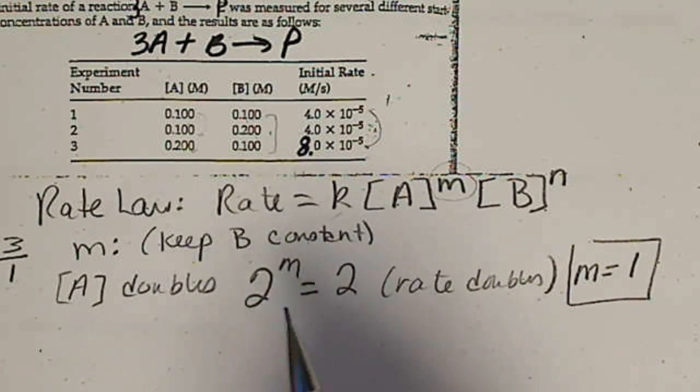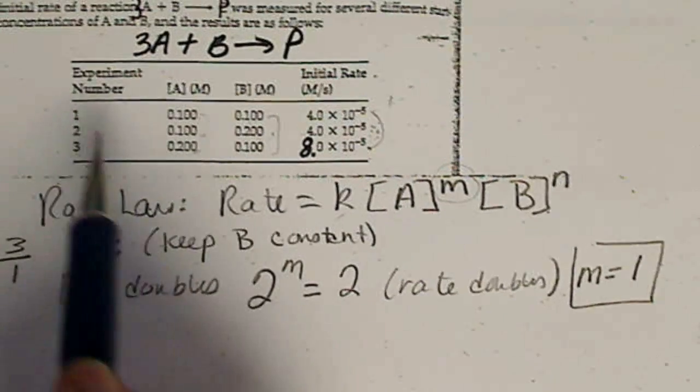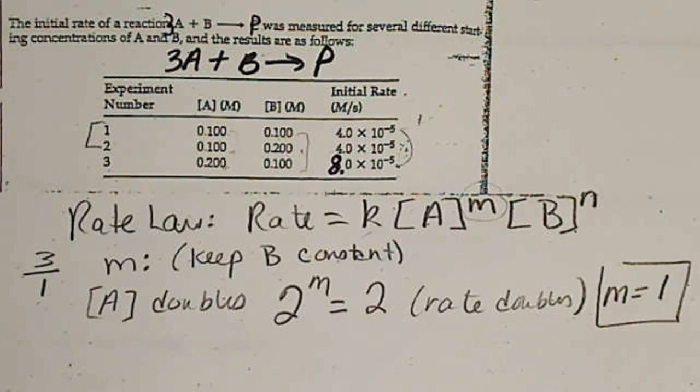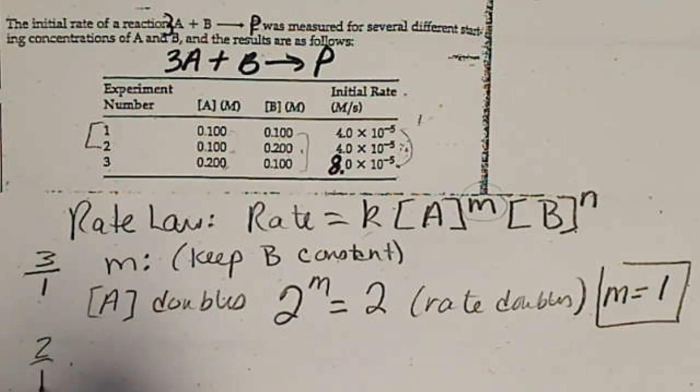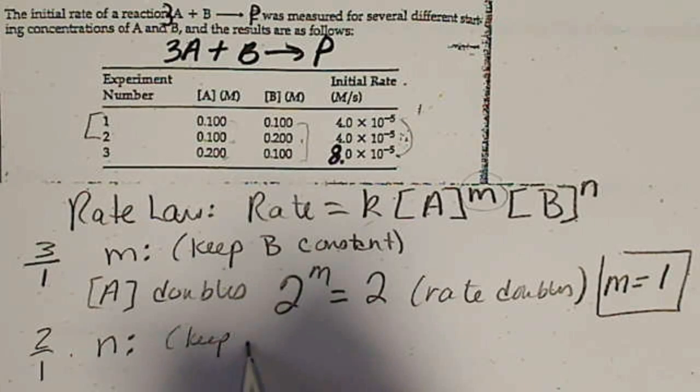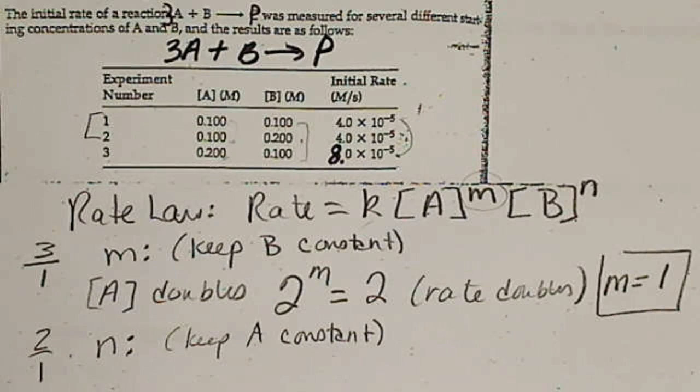If we want to see what varying B does to the reaction, we have to look at the two experiments where A is the same. And that's going to be experiment 2 to 1, and so now we're looking for the power N.